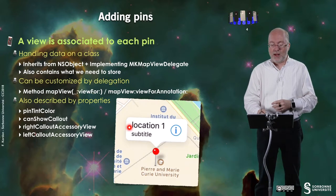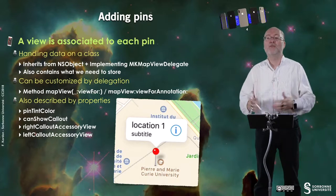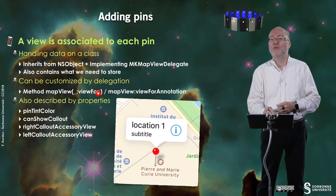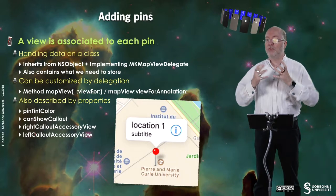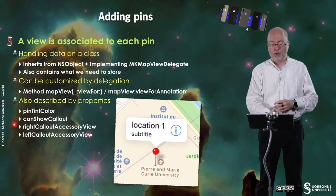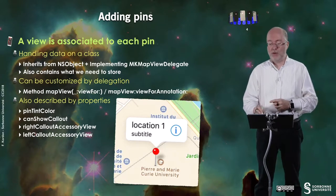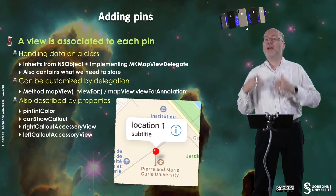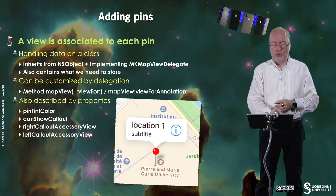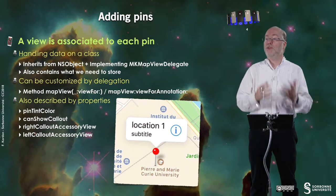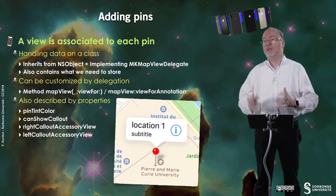There is a view associated to each pin — you can customize it and define what you have inside. So you have a method mapView:viewForAnnotation, associated to a map, and then you have the annotation — the data embedded within a pin. You have some properties: the pin tint color, which is the color of the pin; then canShowCallout — so if you tap on the pin, the callout will be displayed. I will invoke a method to set up the information in this view. You can also have a rightCalloutAccessoryView and a leftCalloutAccessoryView. If you don't define them, they are set to nil and nothing is displayed.